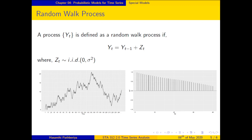Another special model is the random walk model, also called the random walk process. The notation is: yt = yt-1 + εt, where εt is a white noise process. If you can represent yt as the sum of a white noise process and its immediately preceding value yt-1, then your time series is a random walk process.